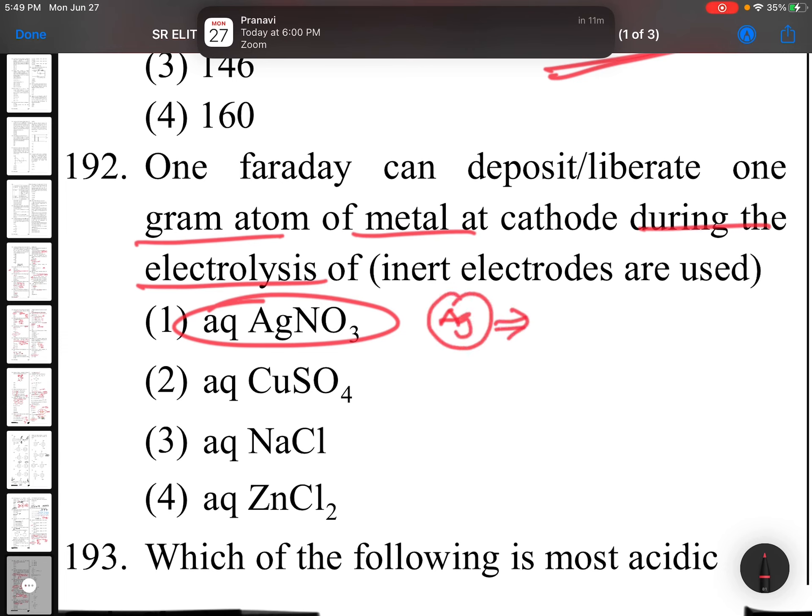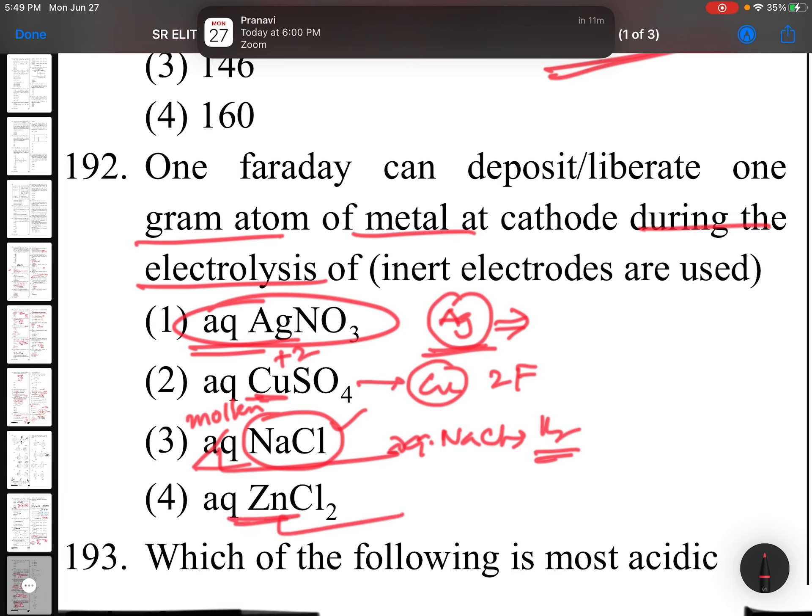Question 192: During electrolysis, one faraday can deposit/liberate one gram atom of metal at cathode. This can give, but should not be aqueous. If it is molten, this will also become your answer. But if it is aqueous, aqueous NaCl gives you hydrogen, not metal. That's the interesting point. But silver, aqueous is enough, you will get silver. And copper gives you copper but requires 2 Faradays because copper has +2 charge. And zinc also needs 2 Faradays.